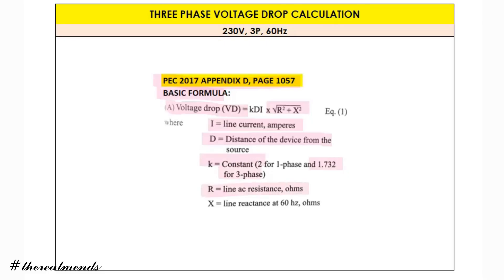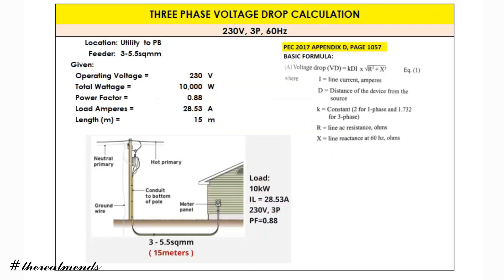R is the line resistance in ohms, and X is the line reactance at 60 hertz expressed in ohms. Now let's use this formula to solve for the three-phase voltage drop calculation. Our given values are: operating voltage 230 volts, total wattage 10,000 watts or 10 kilowatts, power factor 0.88, and load amperes 28.53.